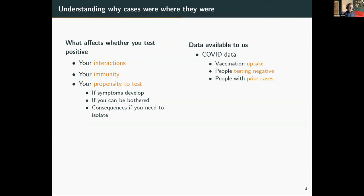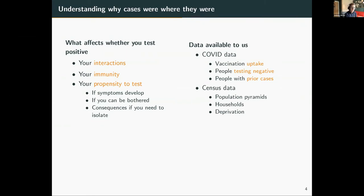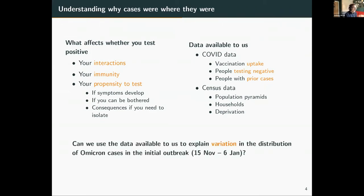We don't have individual-level behavioral data, but what we do have is COVID data: vaccination uptake at the individual level, testing data including negatives at the individual level, and using that we can see who's tested positive before. We also have census data - from the 2011 census, slightly out of date due to the Scottish census being delayed by COVID - giving us population pyramids, information on households such as mean number of people per household in a given data zone, and a number of measures relating to deprivation.